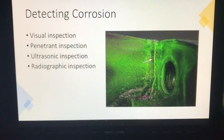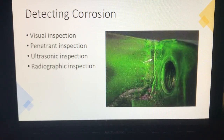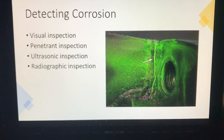Detecting corrosion can be done a few different ways. The first is visual inspection — look and see what you can see. Penetrant inspection uses a dye that is applied and, as shown in the picture, will really bring cracks and other issues to a good visual point so you can see them clearly. Ultrasonic inspection uses ultrasonic waves that can detect weak points or areas where metal is not attached, and can pinpoint where the issue is coming from. There's also radiographic inspection, which is essentially like an x-ray.